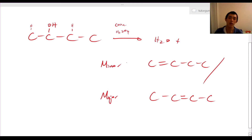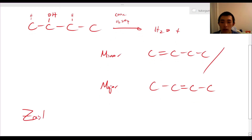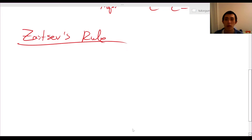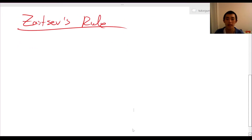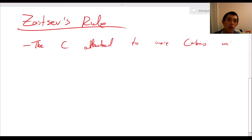So how do we know that? I'm going to introduce you to a rule that will explain why. After we learn the rule, we'll see some examples, and after the examples, we'll go through the mechanism. The rule is called Zaitsev's rule — it tells us which product will be the major and which will be the minor. Zaitsev was also Russian, a bit like Markovnikov. Zaitsev's rule basically says the carbon attached to more carbons will get the double bond.